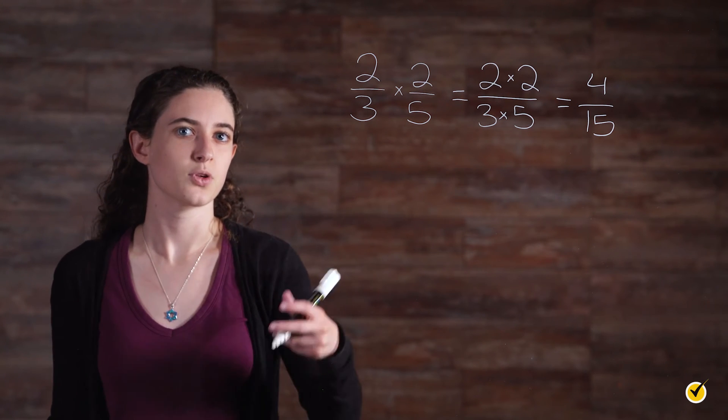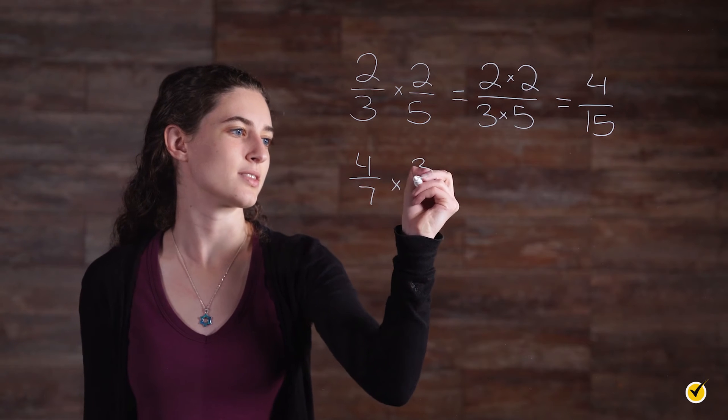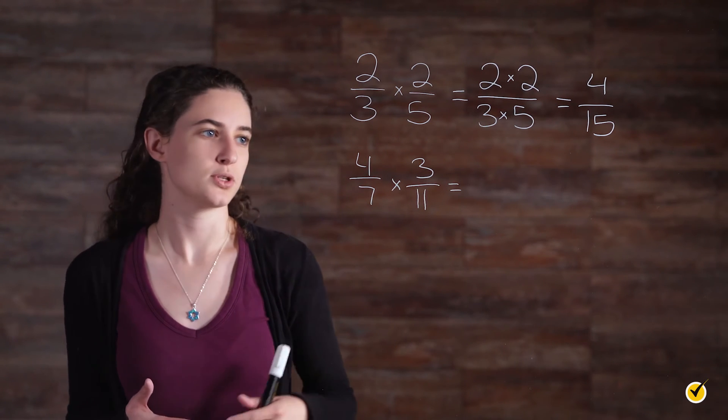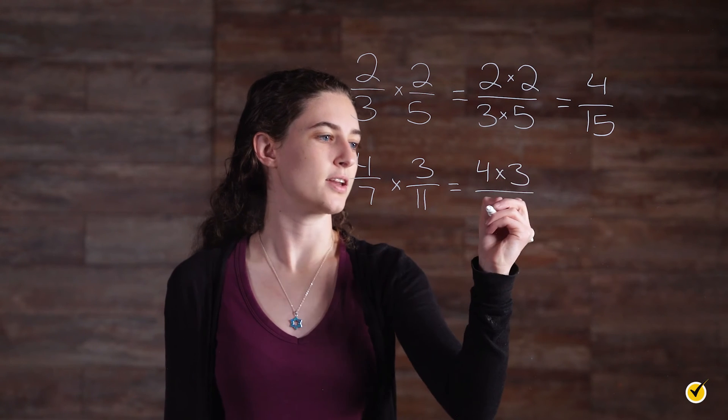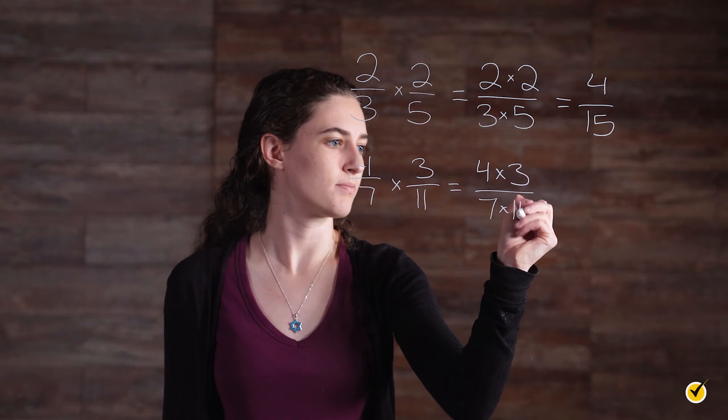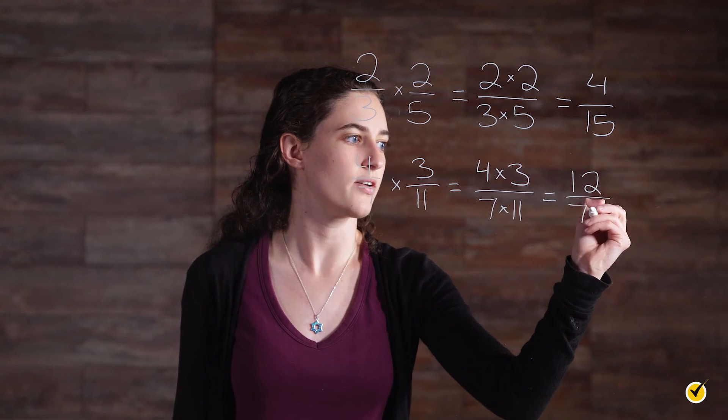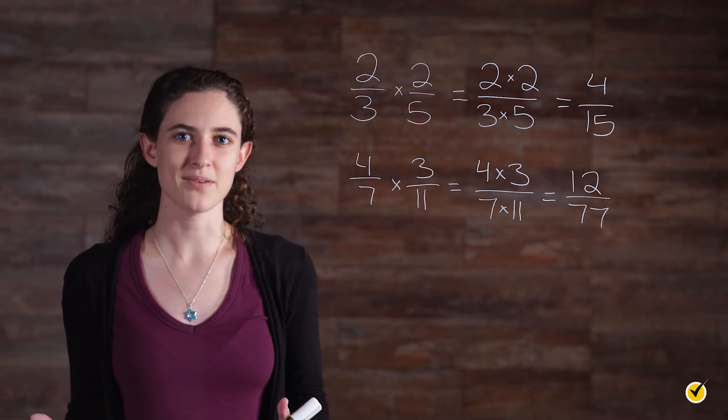Now let's try another one. We're going to try 4 sevenths times 3 elevenths. Again, it's the same concept. We're going to multiply 4 times 3, divided by 7 times 11, which gives us 12 over 77. 12 seventy-sevenths. Pretty simple, right?